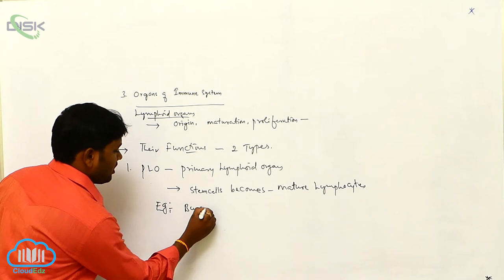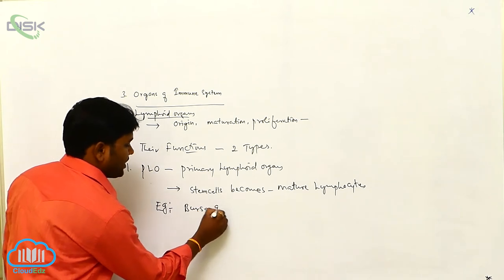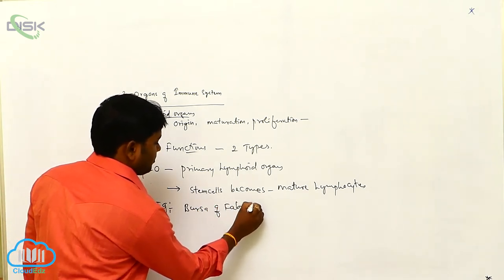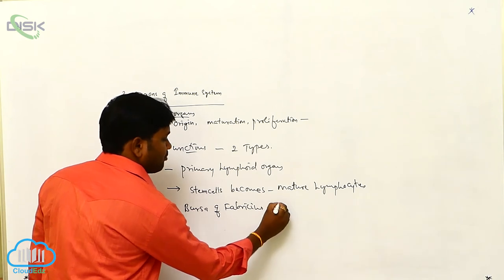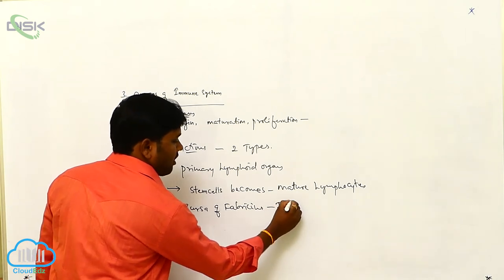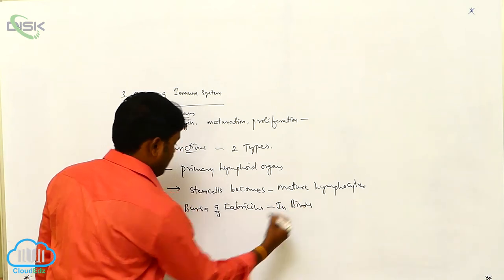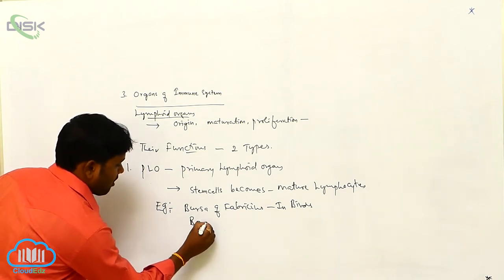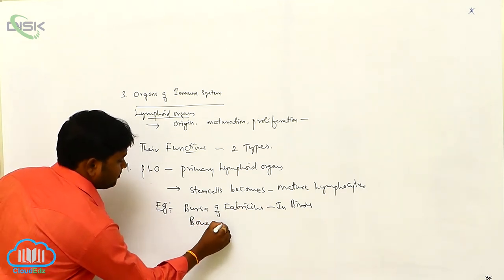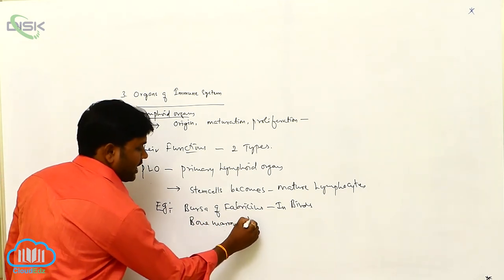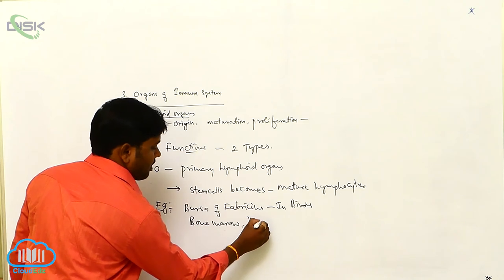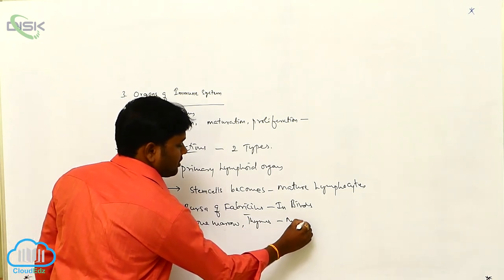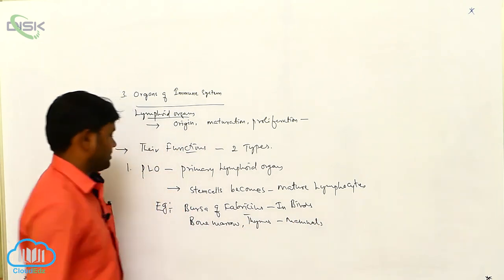Examples of primary lymphoid organs include the bursa of Fabricius in birds, bone marrow, and the thymus in mammals.